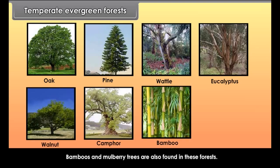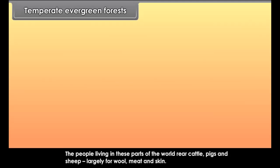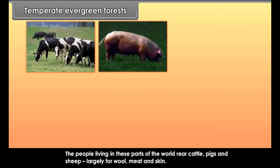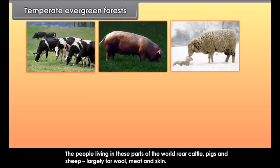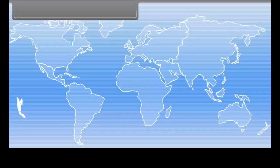Bamboos and mulberry trees are also found in these forests. The people living in these parts of the world rear cattle, pigs and sheep largely for wool, meat and skin.